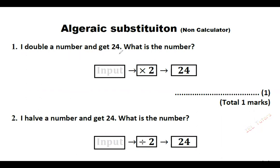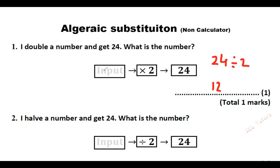Question one says: I double a number and get 24. What is the number? In terms of a function machine, there's an input box and this is being multiplied by 2, and in the output we get 24. So we have to think what was the number in the input. To go backwards we always do the inverse operation, so the opposite of multiplying by 2 is dividing by 2. So 24 divided by 2 will give me 12. The number is 12.